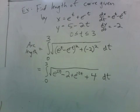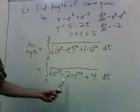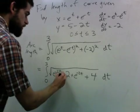So we get e to the t minus e to the minus t squared plus negative 2 squared dt. And if you multiply the inside out, you get this, and 4 minus 2, so just a plus 2.